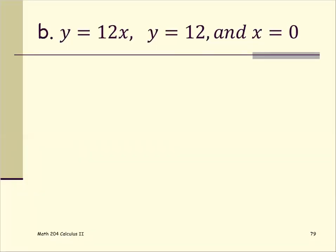This one we have the line y equals 12x as the straight line with slope 12, y equals 12 is the horizontal line, and x equals zero is the y-axis. Put them all together.